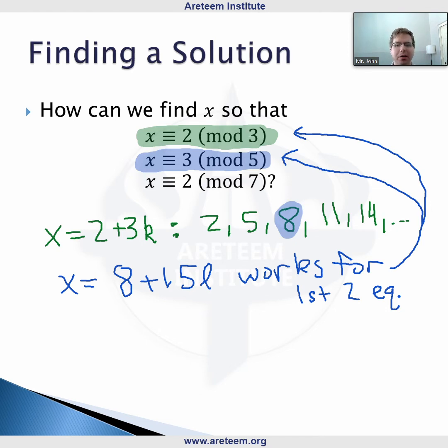So something like x = 8 + 15l for another integer l. This works for the first two equations. Now, you're probably seeing what we're going to do next. We look at examples: 8, 23, 38, etc. Is 8 two mod 7? No. Is 23 two mod 7? It's 21 + 2, so yes.